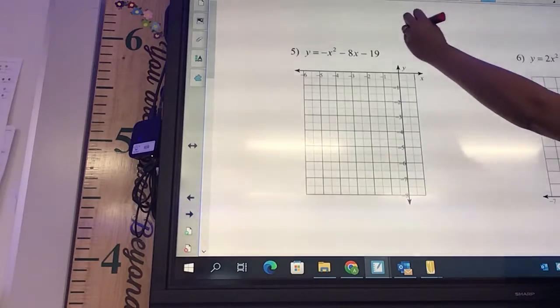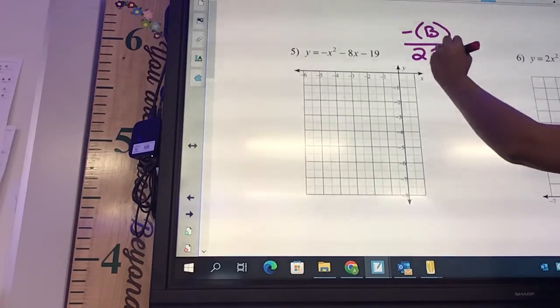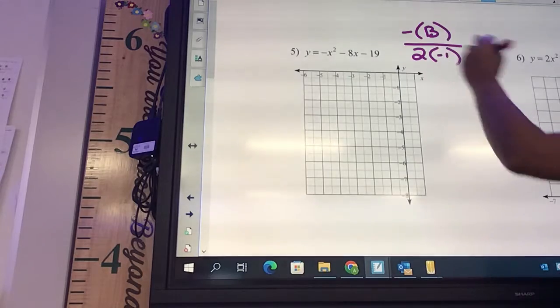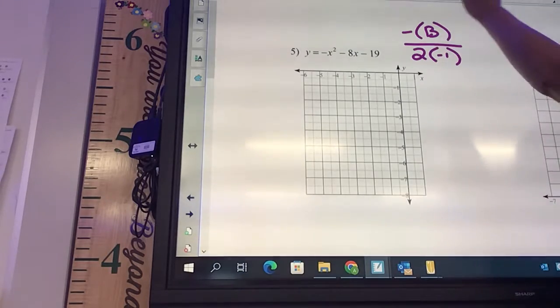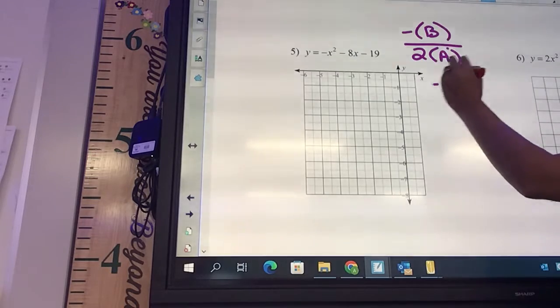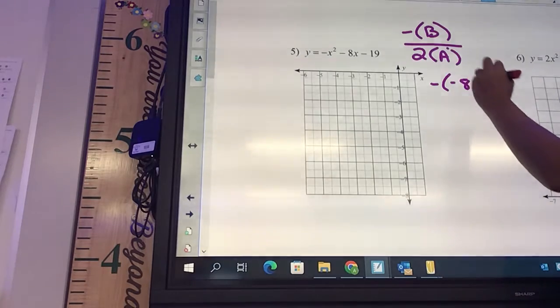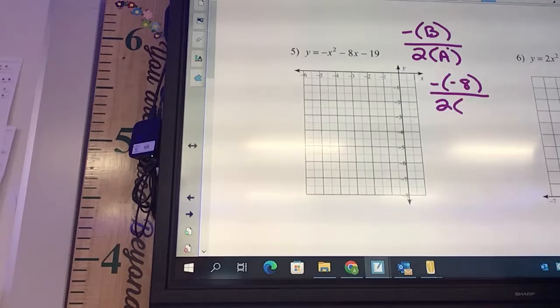We're going to use our formula. Negative, parenthesis, B over two times our A, and our A is negative one. Oh shoot, this should say A. Okay, and so it's going to be negative. What's our B? Negative eight. Make sure you put that double negative on there. Okay, over two in our A. What is our A? Negative one. Negative one.